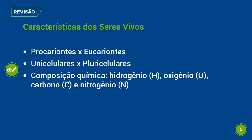Já nas células eucariontes, que são as células evoluídas, nós temos aquela estrutura da célula: membrana plasmática, citoplasma e o material genético bem guardado dentro do núcleo. A professora Sabrina também falou sobre a quantidade de células que os seres vivos podem ter. A unidade básica para ser classificado como ser vivo é ter célula. Quem tem uma célula é chamado de unicelular, como as bactérias. Quem tem mais de uma célula são os pluricelulares, como animais e plantas.